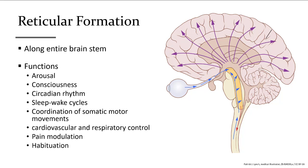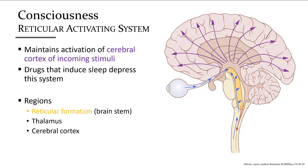The reticular formation is a column of white and gray matter extending the length of the brainstem, incorporating all brainstem functions. This diffuse structure is the base of a large network of connections — the term 'reticular' refers to network — extending through the brain and to the body. The reticular activating system uses pathways within the reticular formation through the thalamus to direct sensory impulses throughout the cerebral cortex, where we become conscious of incoming stimuli.